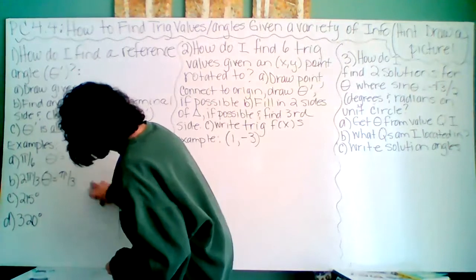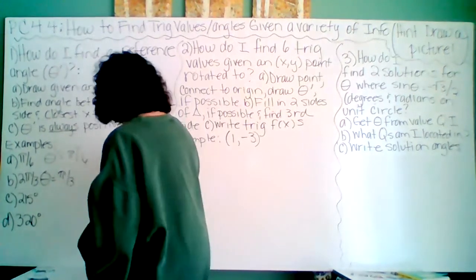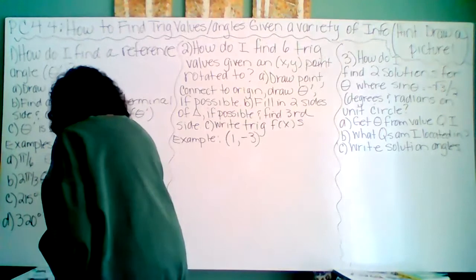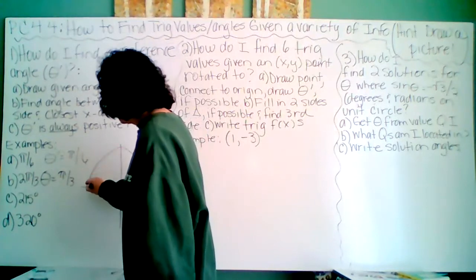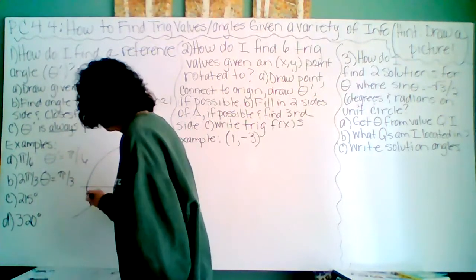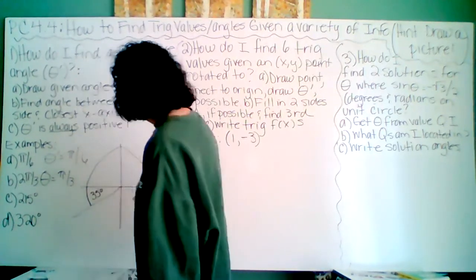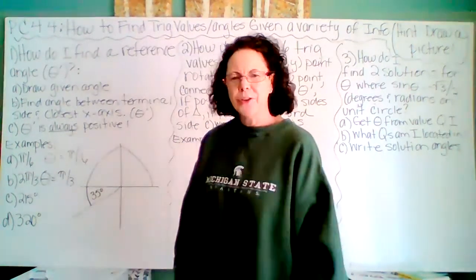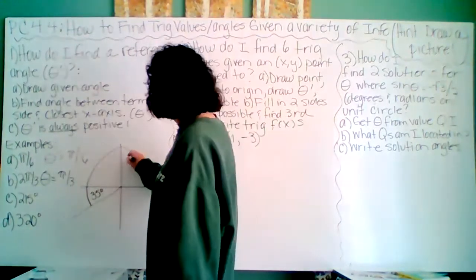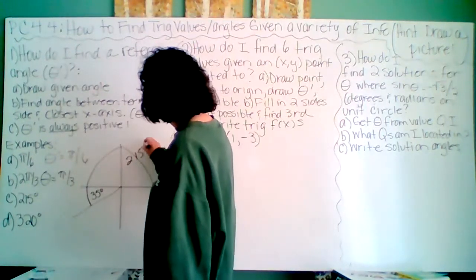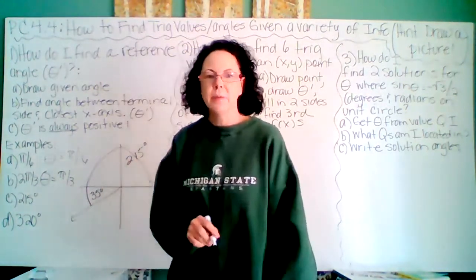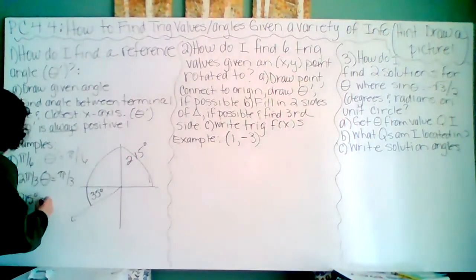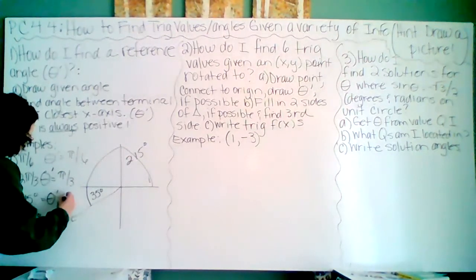Example C: 215 degrees. Let's go ahead and rotate that. Here's 90, 180, and I have to go 35 more. I stopped at 180 and said how much farther do I have to go? It was 35 degrees. So here is my 215-degree rotation. I am 35 degrees from the closest x-axis. My reference angle is 35 degrees.